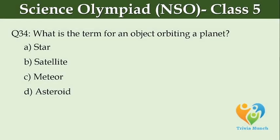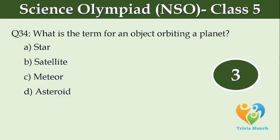What is the term for an object orbiting a planet? Option A, star. Option B, satellite. Option C, meteor. Option D, asteroid.